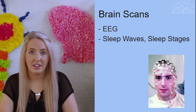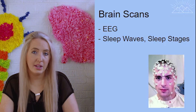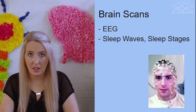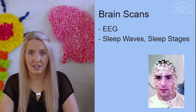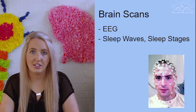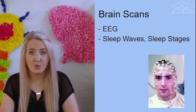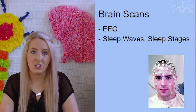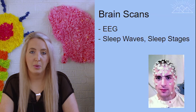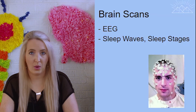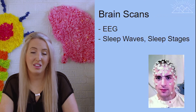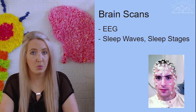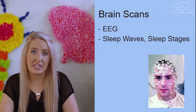Brain scans are really divided into two major categories. We have functional brain scans that show us what the brain is doing, and structural brain scans that show us the different parts of the brain. The first functional scan is called an EEG, and this is used to help us measure brain activity by looking at brain waves. We'll talk about this one a lot in our sleep and consciousness unit because it helps us know what stage of sleep someone is in when hooked up to an EEG while sleeping.